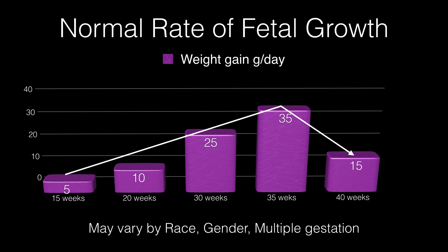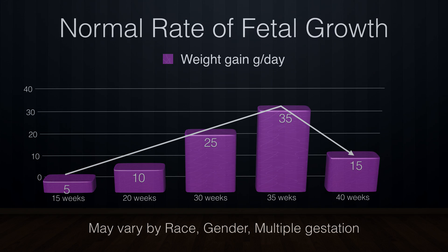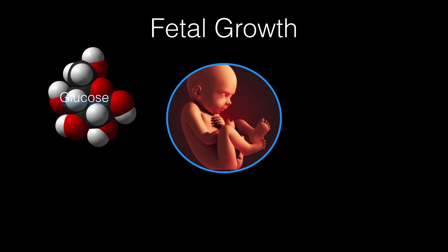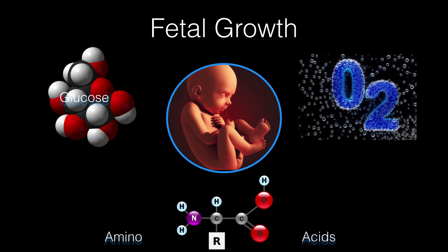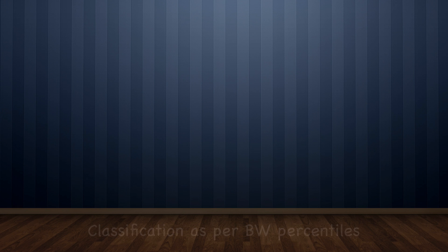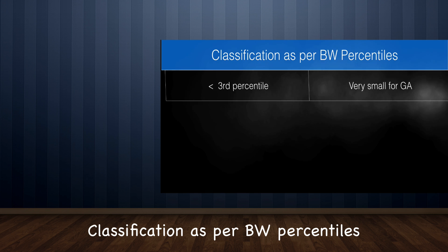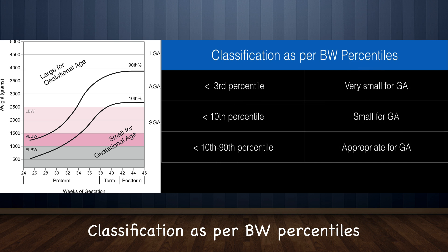Fetal growth depends on two components: genetic potential, derived from both parents and mediated through insulin-like growth factor, and substrate supply. Fetuses require glucose, oxygen, and amino acids for growth, which are derived from the placenta and depend on uterine and placental vascularity. The currently accepted classification by birth weight percentiles is: less than 3rd percentile — very small for gestational age; less than 10th percentile — small for gestational age; 10th to 90th percentile — appropriate for gestational age; and greater than 98th percentile — large for gestational age.